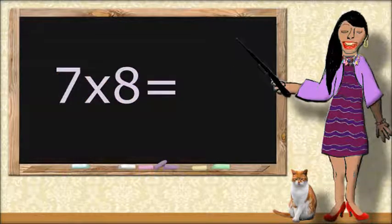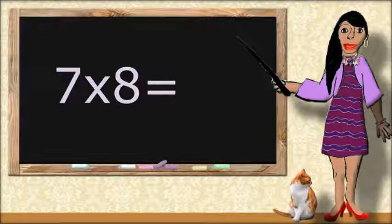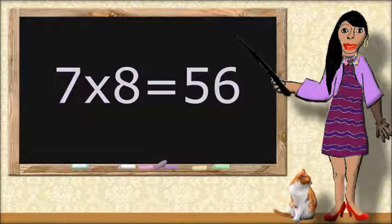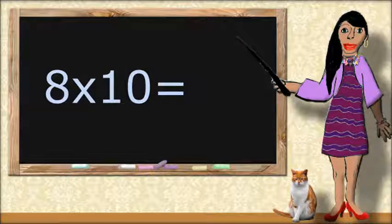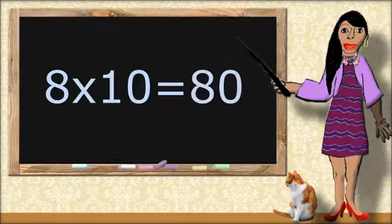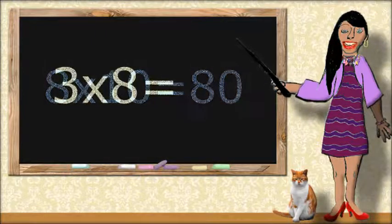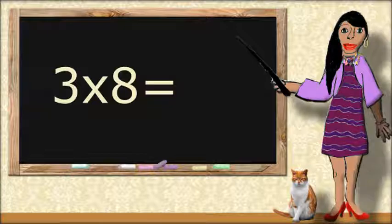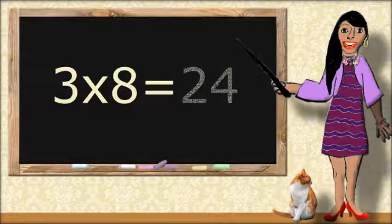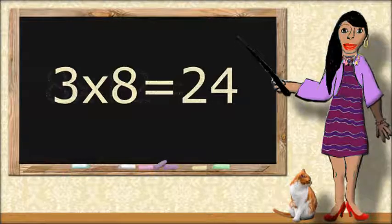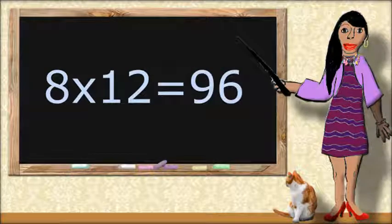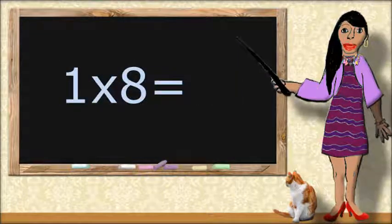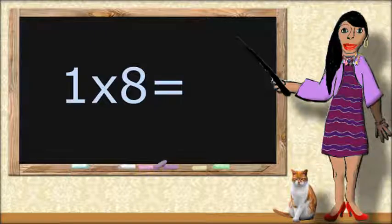7 times 8 equals 56. 8 times 10 equals 80. 3 times 8 equals 24. 8 times 12 equals 96. 1 times 8 equals 8.